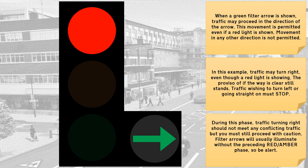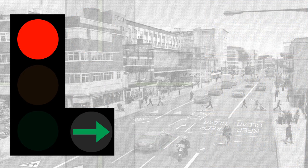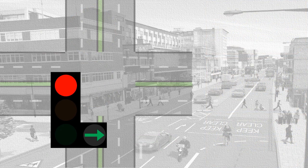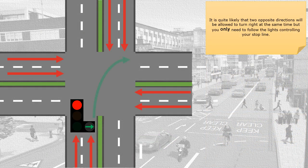Filter arrows will usually illuminate without the preceding red and amber phase, so be alert. It is quite likely that two opposite directions will be allowed to turn right at the same time, but you only need to follow the lights controlling your stop line.